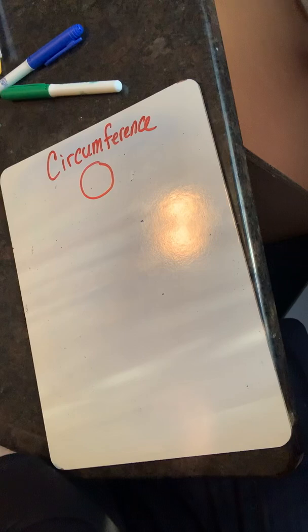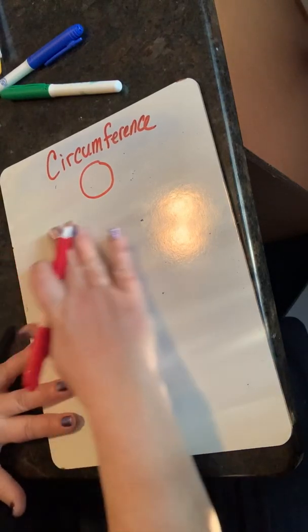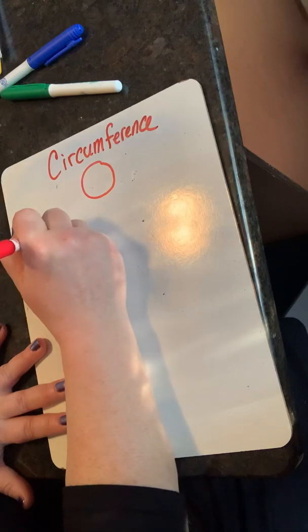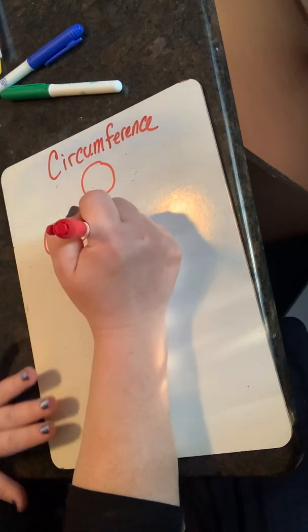Instead, we use diameter or radius and an equation to find the distance around our circle. En su lugar, usamos diámetro, radio y una ecuación para encontrar la distancia alrededor de nuestro círculo.